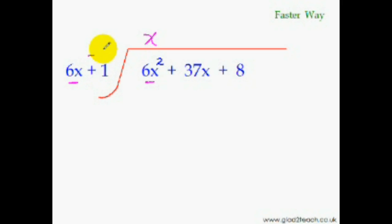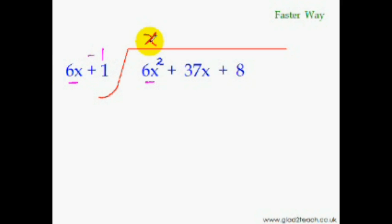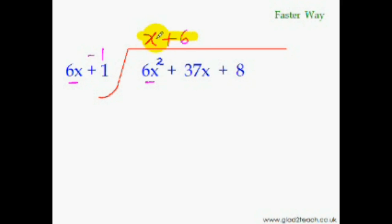Multiply minus 1 with X and add it to the next term of the dividend, but before you put down the answer term, make sure you divide by the extra coefficient, which is 6. Minus 1 times X is minus X. Minus X plus 37X gives plus 36X. Before we put down 36, we divide by 6: 36 divided by 6 is 6. So we put plus 6 here, and we have the final answer — this is our quotient.